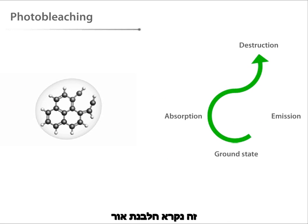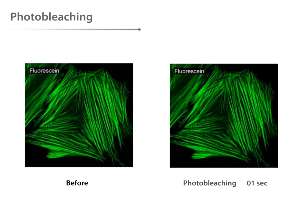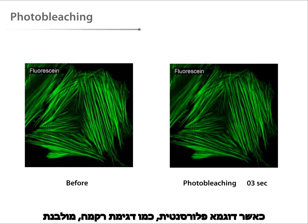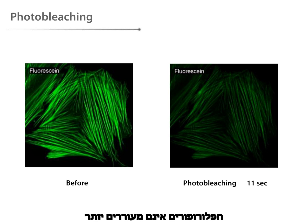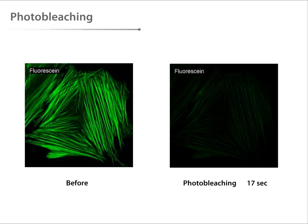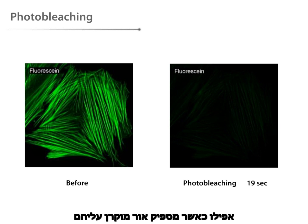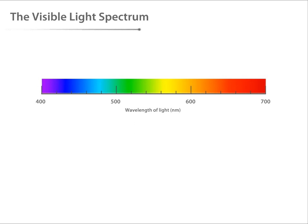High-intensity illumination can cause the fluorophore to change its structure so that it can no longer fluoresce. This is called photobleaching. When a fluorescent sample, such as a slide with mounted tissue, is photobleached, the fluorophores are no longer promoted to an excited state, even when the required light energy is supplied.